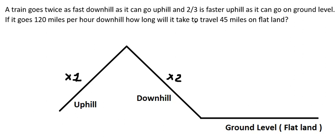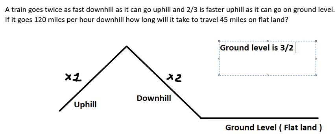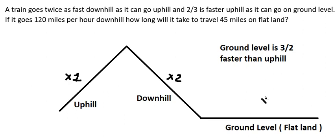Now the next one, 2 over 3 is faster uphill as it can go on ground level. That means we compare ground level to uphill that is about 3 over 2. So this one that is about 3 over 2 compared to uphill in here.